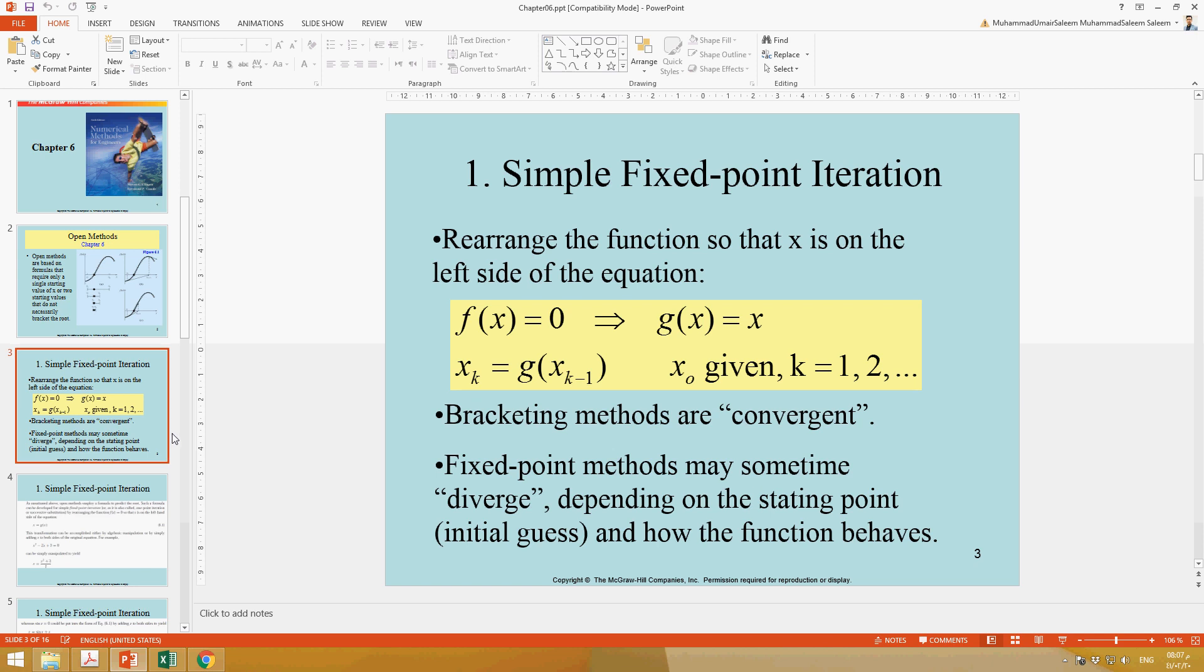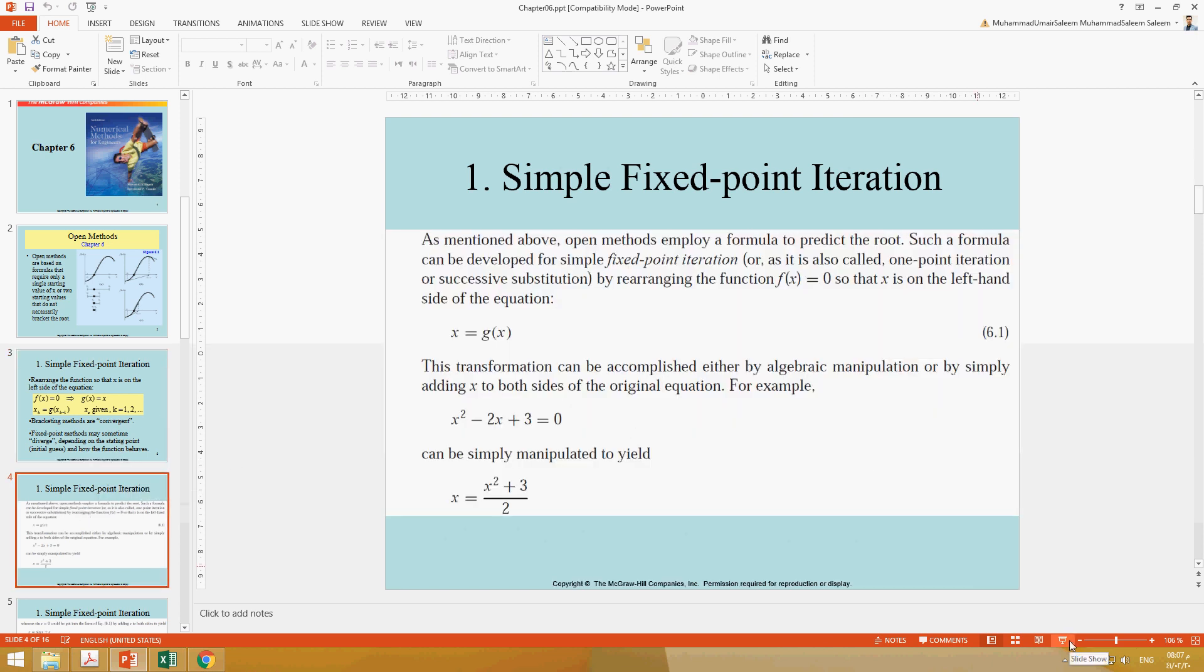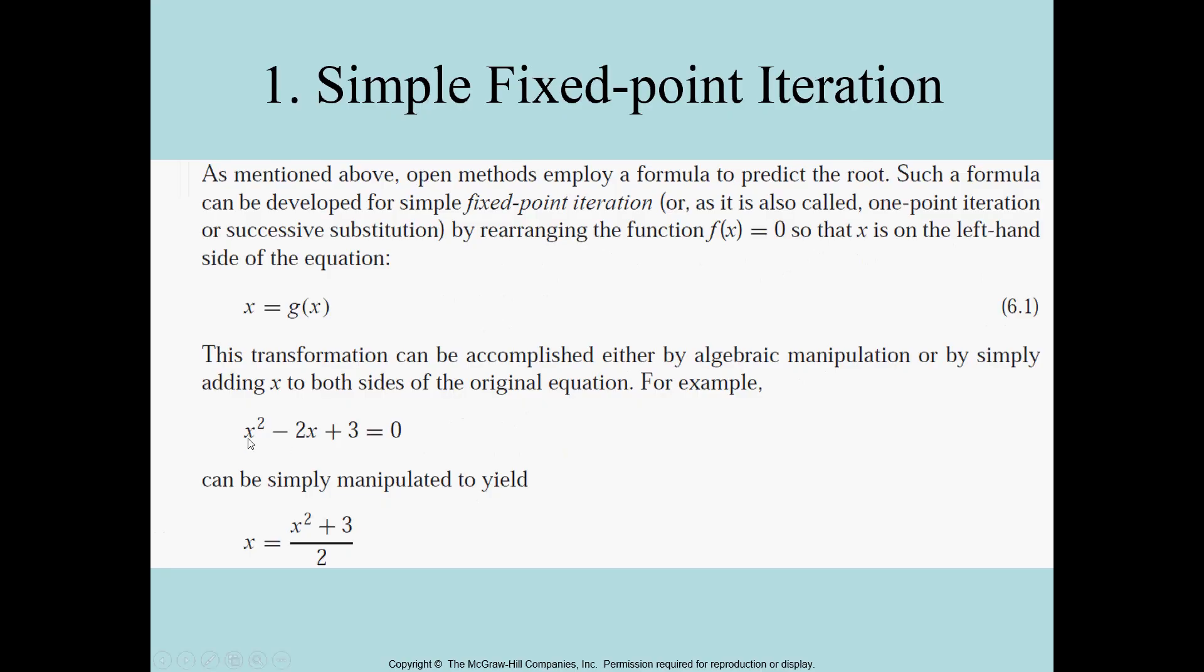For example, if you see here we have x² - 2x + 3 = 0, we will just take x out of this equation and make two parts: one is the left-hand side and the other one is the right-hand side.